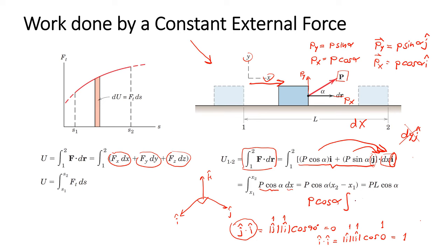Finally, we have P cosine alpha multiplied by (x2 minus x1), where x2 minus x1 is the distance that the box is moved. So the work done by a constant force is equal to P cosine alpha multiplied by the displacement.